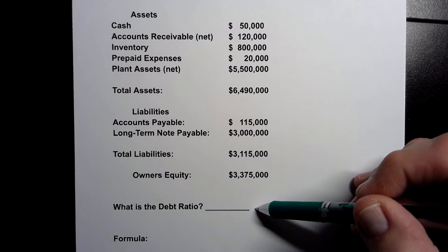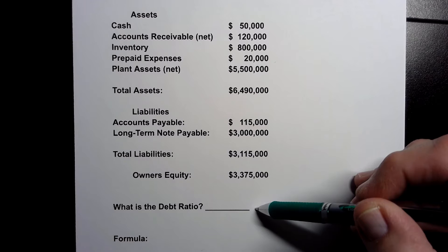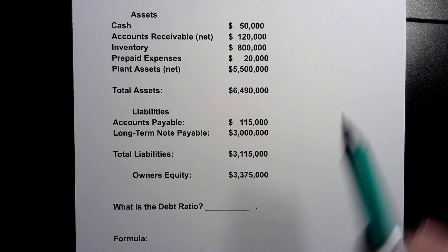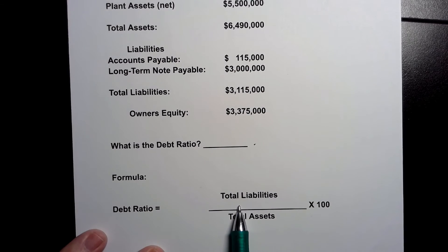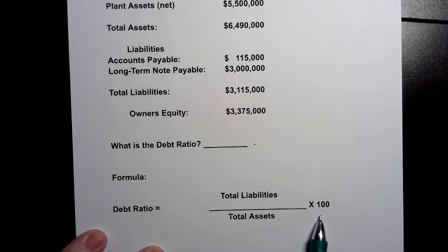So our question is asking us to calculate the debt ratio. To figure out what the debt ratio is you need to know the formula — and it's a very simple formula. Our debt ratio equals our total liabilities divided by our total assets. Once we do that division we're going to multiply by 100 because we're going to turn it into a percentage.